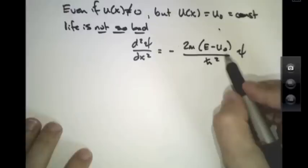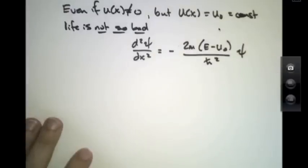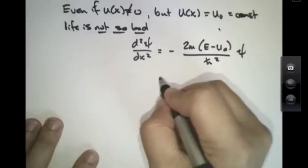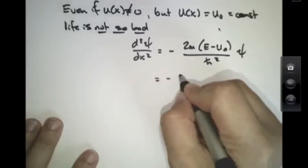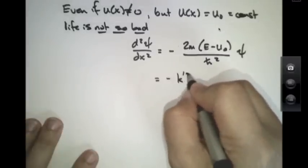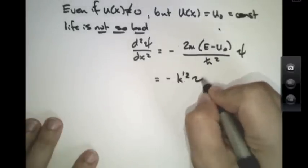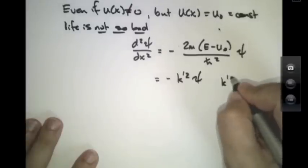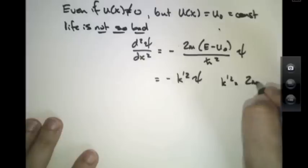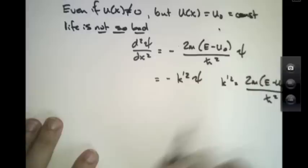Because I have that extra potential term here, which was zero in the last case, but now is constant. And so we can define this to be a new wave number, k prime squared times psi, where k prime squared is that.